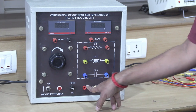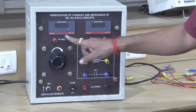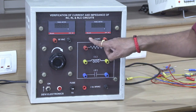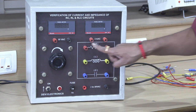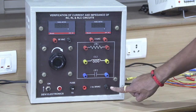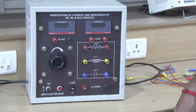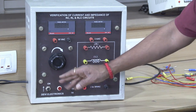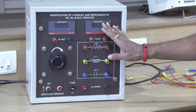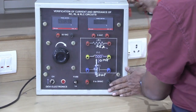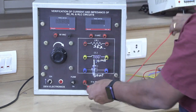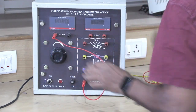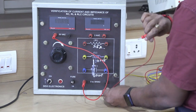The voltmeter is connected in parallel with the power supply, and the ammeter is connected in series with the positive source. Depending on the circuit you are given, you have to connect accordingly. Now, the positive voltage source is connected in parallel with the voltmeter first.